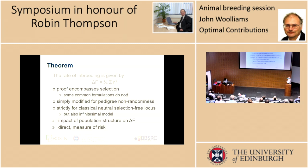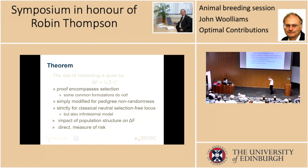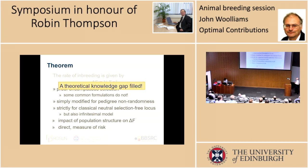It also allows us to think about population structure on delta F. It's freeing it from saying 'let's have some full-sib families, some half-sib families, let's say it keeps the same structure' — does it matter which ones become parents, does it matter whether we've got some breeding males, some breeding females? It takes it away from that kind of detail, which I find important. And so it has filled a theoretical knowledge gap.